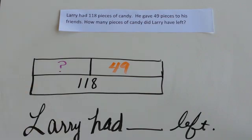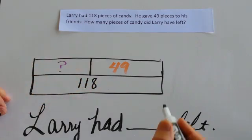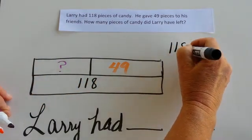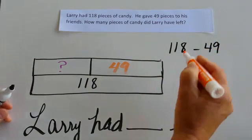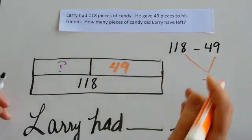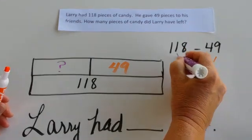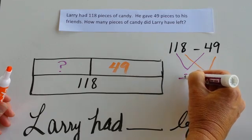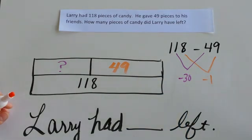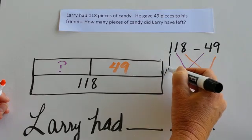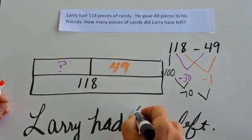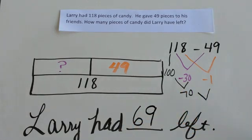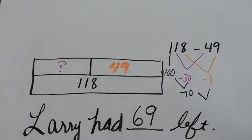Now that we've organized the information right here in our model drawing, we can easily see that we need to subtract 49 from 118. You can compute it in any way you would like to. Today I'm going to use a tree model. 8 subtract 9 is negative 1. 10 subtract 40 is negative 30. And 100 subtract nothing is 100. 100 take away 30 is 70. And 70 take away 1 shows us that Larry had 79 pieces of candy left when he shared. What a generous friend.